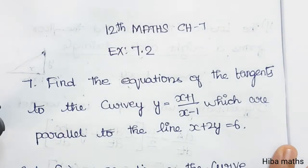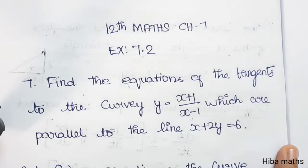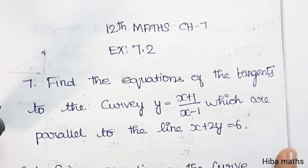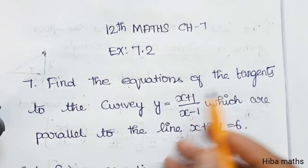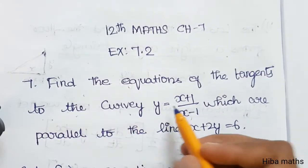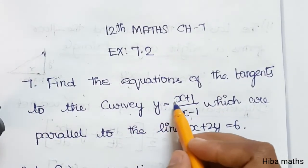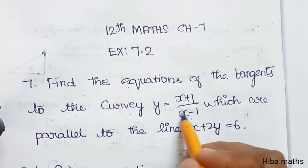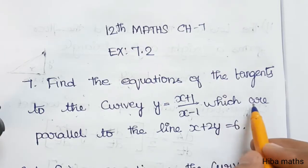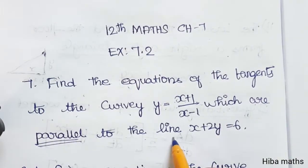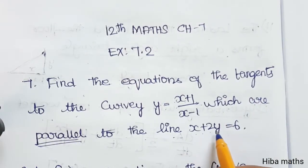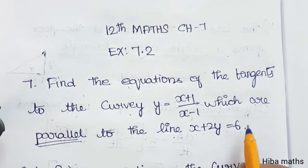Hello students, welcome to Hibamax 12th standard, max chapter 7, exercise 7.2, 7th question. Find the equation of the tangent to the curve y equal to (x+1)/(x-1) which are parallel to the line x plus 2y equal to 6.